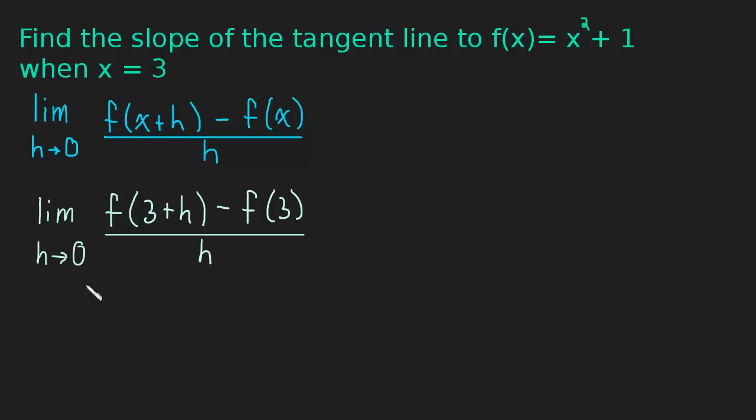Now what? Well, now we just plug in this 3 plus h into every x we see. So we just cram it in for x, and the same thing here. We take this 3, and we cram it in for x. So let me show you what I mean. So this is equal to the limit as h approaches 0 of 3 plus h squared. So I took that 3 plus h, and I crammed it into the x, plus 1. So that's this.